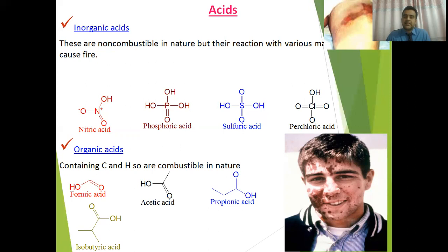Inorganic acids are non-flammable in nature. Whereas organic acids are the acids which contain carbon in their backbone. They are generally carboxylic acids such as formic acid, acetic acid, propionic acid, isobutyric acid, and many more. These acids are combustible in nature.